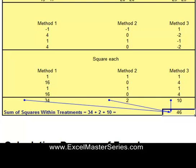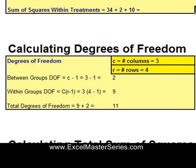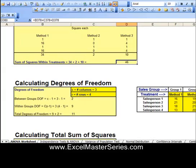Now we have to calculate the degrees of freedom. Degrees of freedom between groups equals the number of columns minus 1, so C minus 1 — that's 3 columns minus 1, which equals 2. Degrees of freedom within groups equals the number of columns times the quantity of number of rows minus 1 — that's 3 times (4 minus 1), which equals 9. Total degrees of freedom is 11.